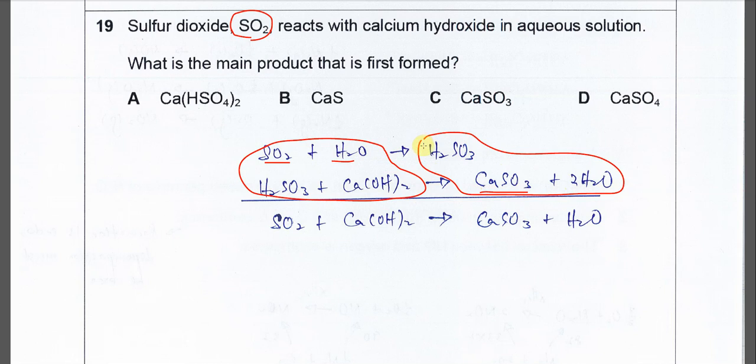Of course, this involves cancellation. So water here is one, here is two, so one H2O remains. The sulfurous acid is going to be eliminated.